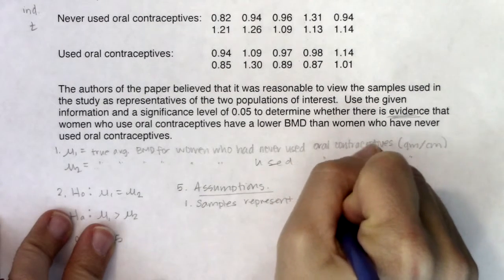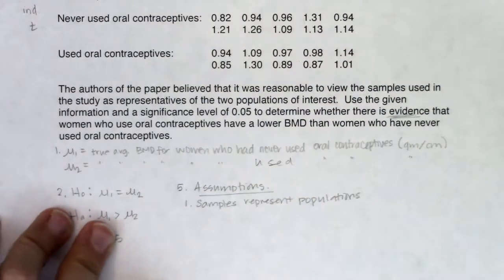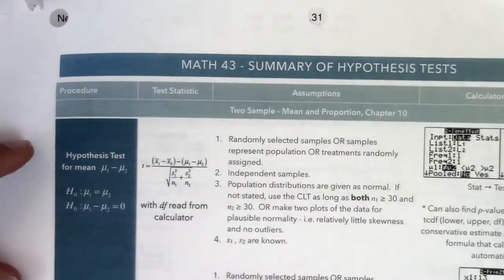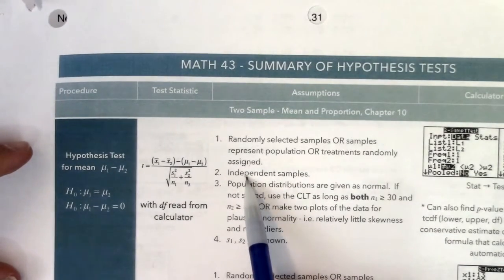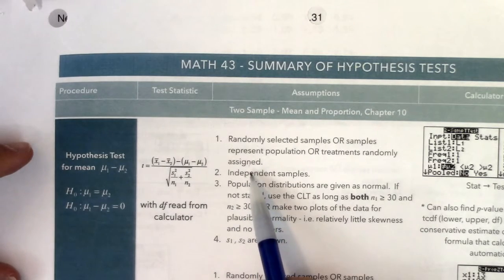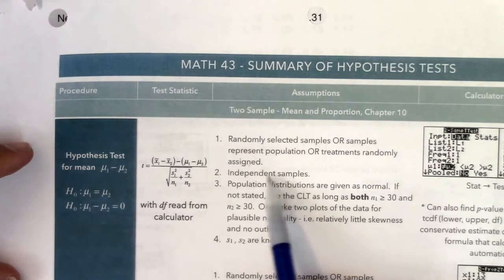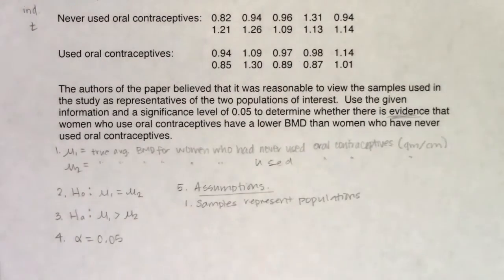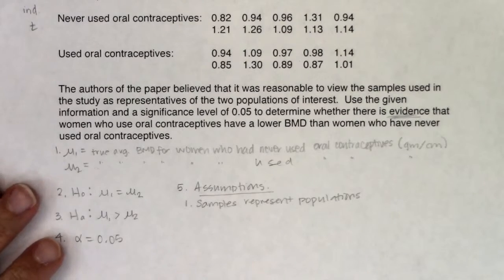This might be the first time in this class we're seeing this type of setup, but ultimately that's what you want from your sample anyway — you want it to represent your population on a smaller scale so you don't have to run a census. For assumption number two, we need to state that we have independent samples. The bone mineral density for women who don't use the pill has no effect on the bone mineral density for women who do, so these are independent samples.